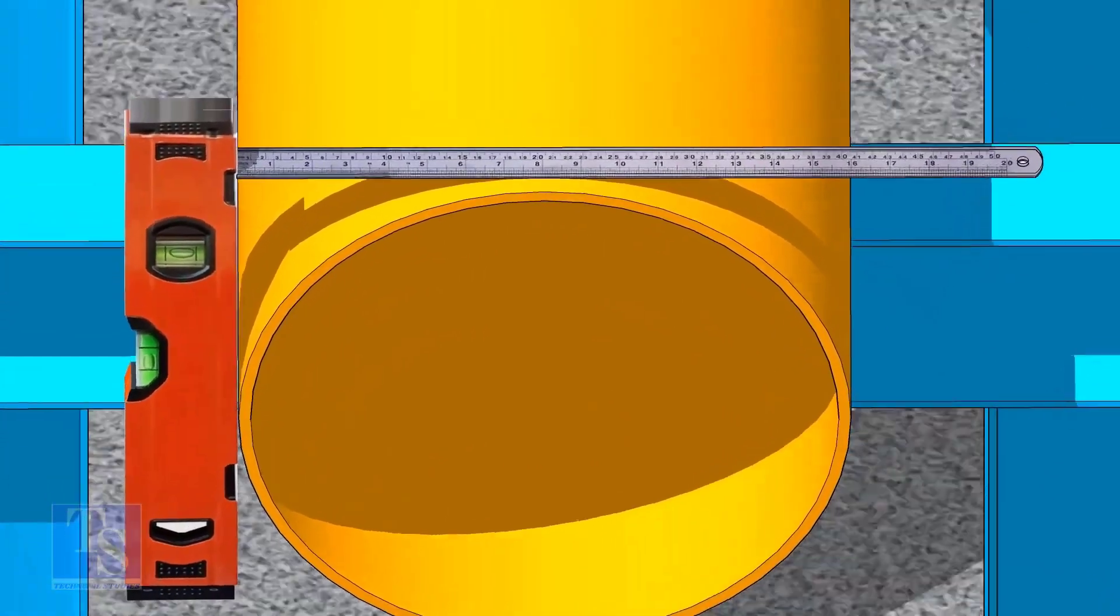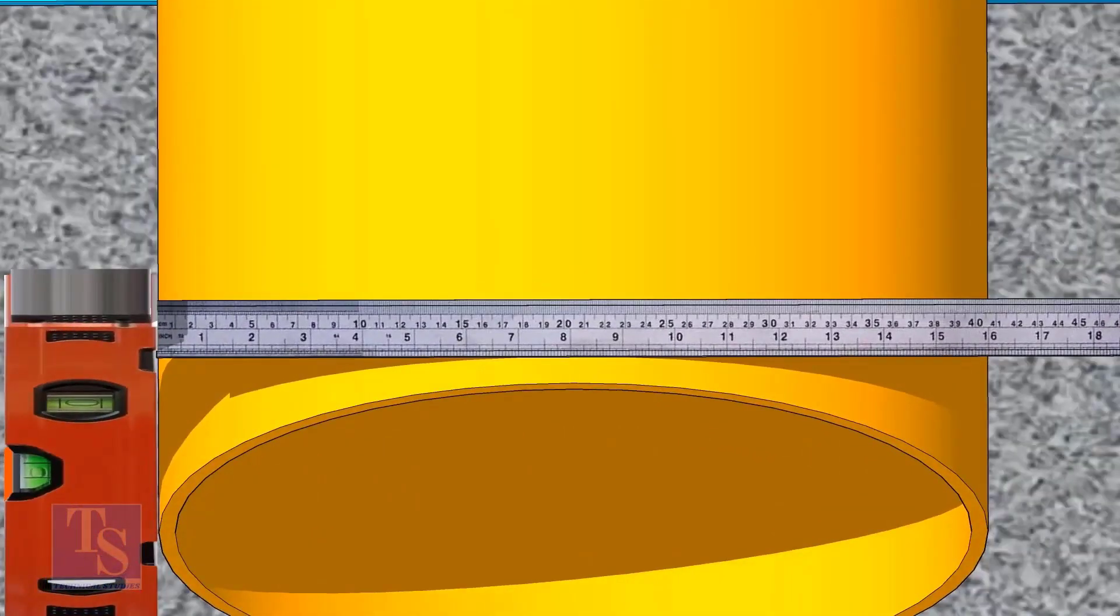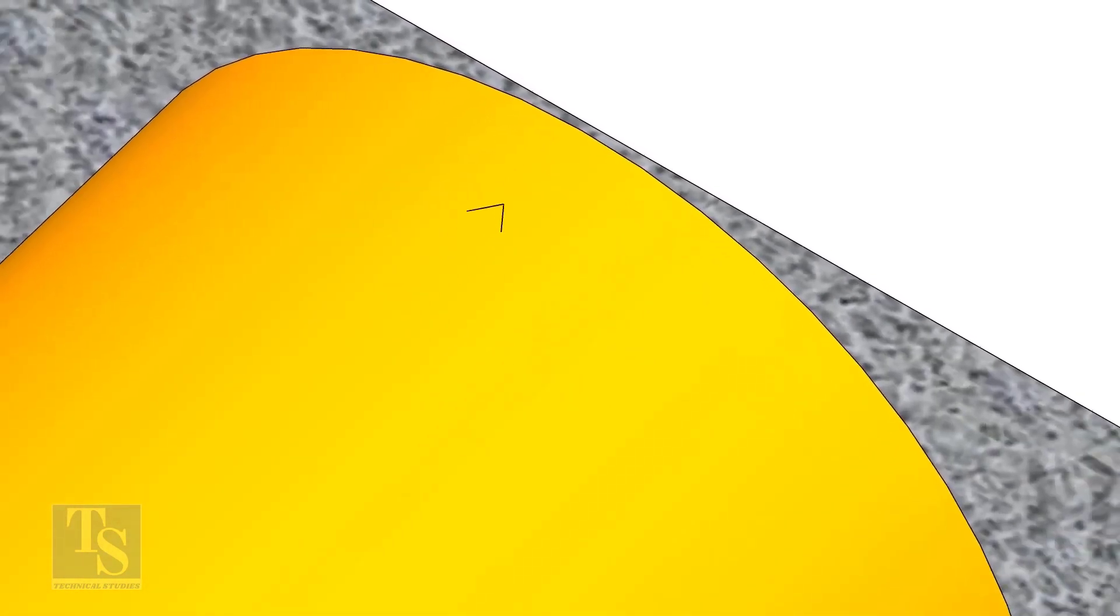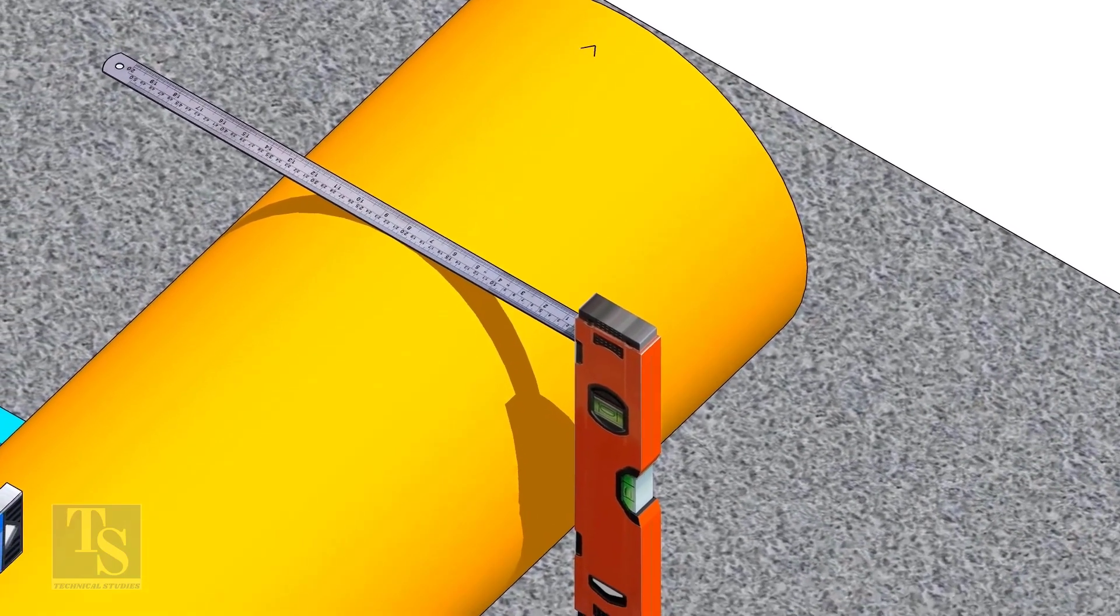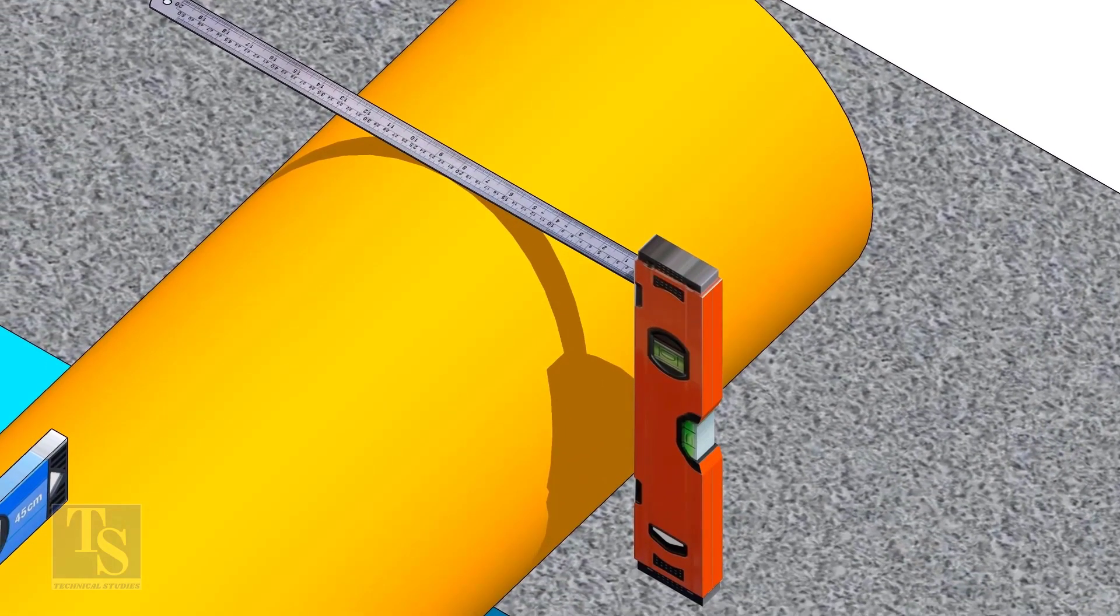Mark half OD at 300 millimeters apart. This pipe OD is 406 millimeters, so mark 203 millimeters from the vertical level bottle on the top of the pipe. And draw a line connecting these marks.